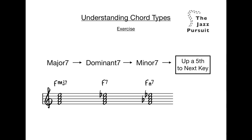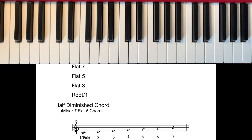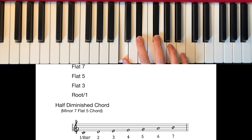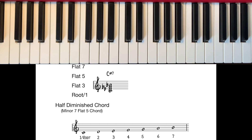Now we're familiar with major sevens, dominant sevens and minor sevens, let's take a look at half diminished and diminished chords. A half diminished — or as it's also known, a minor seven flat five chord — is made up of the root, flat 3rd, flat 5th and flat 7th. Let's build a C half diminished chord. Here's our C major scale again. First we need the root C. Then we flatten our 3rd E to an E flat, flatten our 5th G to a G flat, and finally flatten our 7th B to a B flat, making our C half diminished chord. Minor seven flat five is a really logical way to think about this chord, as the only difference between a half diminished chord and a minor seven chord is that we've flattened the fifth.